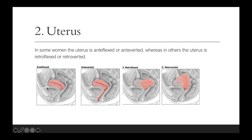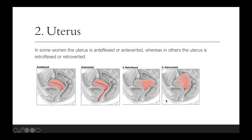The difference between anteflexed and anteverted: in an anteverted uterus, the cervix is tilted towards the urinary bladder or forward into the abdomen, whereas in an anteflexed uterus, both the cervix and the body are tilted forwards. Similarly, for a retroverted uterus the cervix is tilted backwards, whereas a retroflexed uterus has both the cervix and the body tilted backwards.